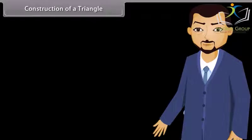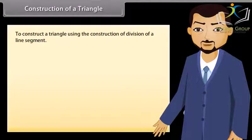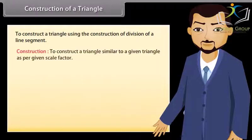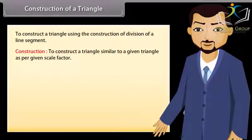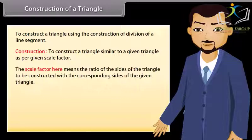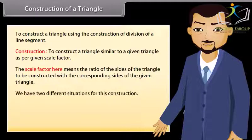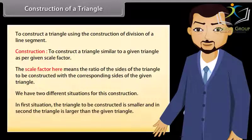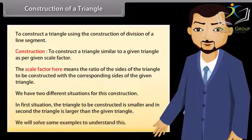We will now learn to construct a triangle using the construction of division of a line segment. To construct a triangle similar to a given triangle as per a given scale factor — the scale factor here means the ratio of the sides of the triangle to be constructed with the corresponding sides of the given triangle. We have two different situations: in the first, the triangle to be constructed is smaller, and in the second, the triangle is larger than the given triangle. We will solve some examples to understand this.